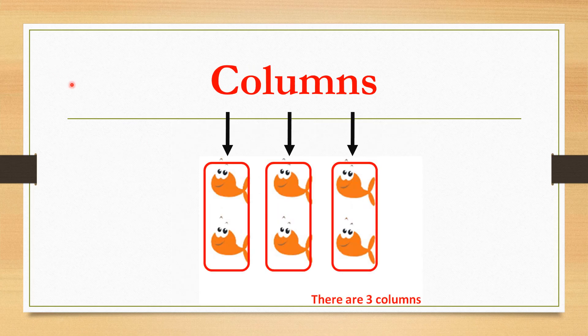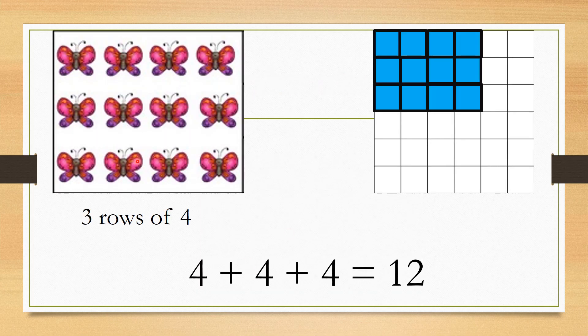For columns, I move from up to down. So how many columns do I have here? One, two, three - so I have three columns. Let's take a look at this picture. How many rows do I have?